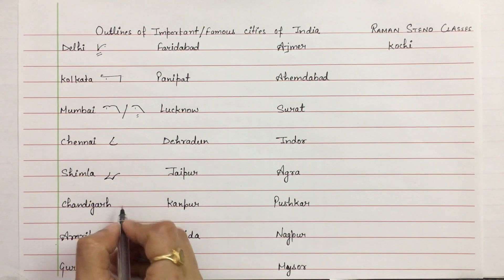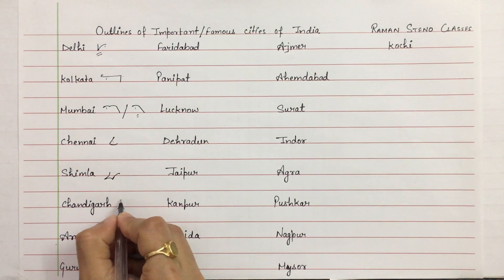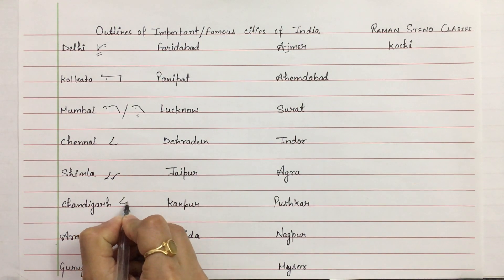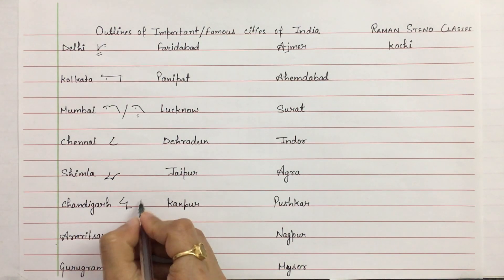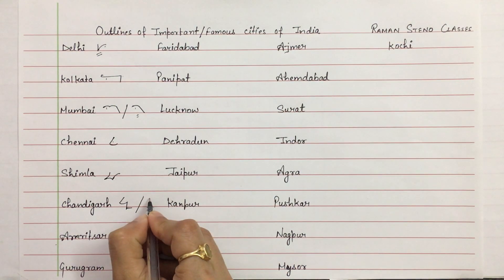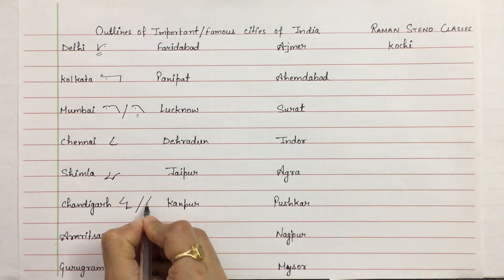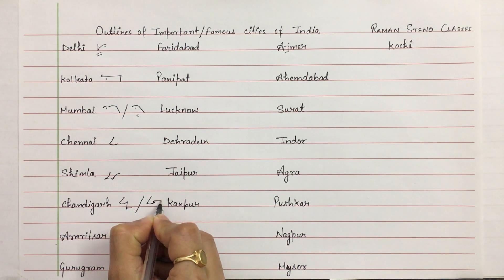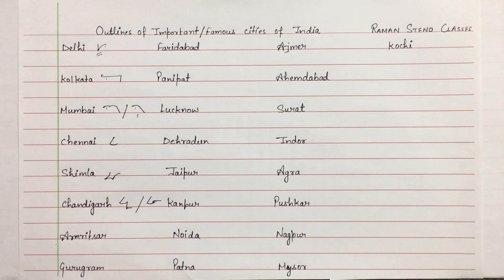Chandigarh — above the line. Chandigarh. Or you can also use omission with D. Here you can also finish the outline.